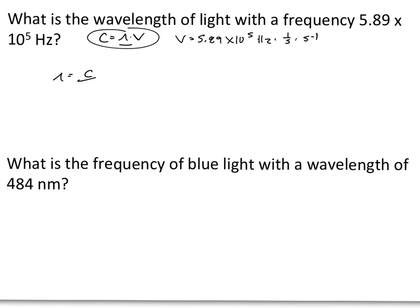So our speed of light divided by frequency. We know that our speed of light is a constant, 3.00 × 10⁸ meters per second. You need to memorize that.